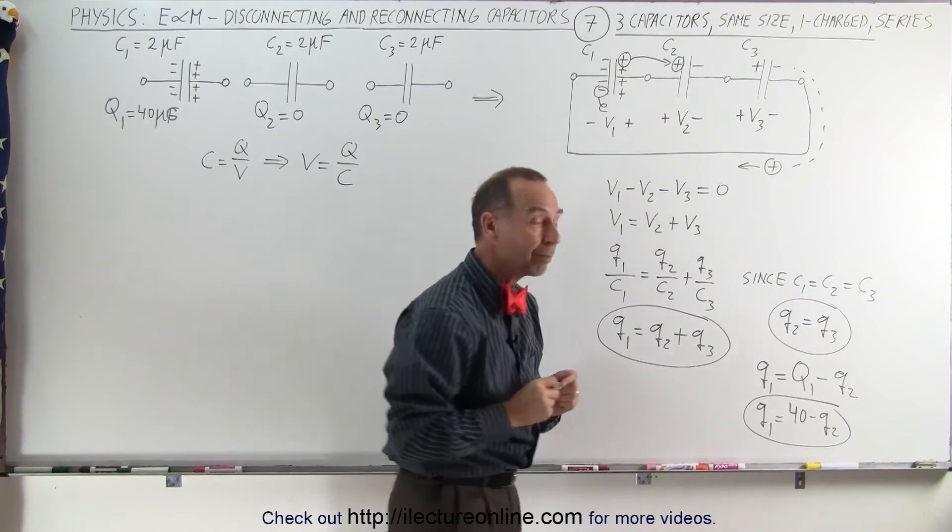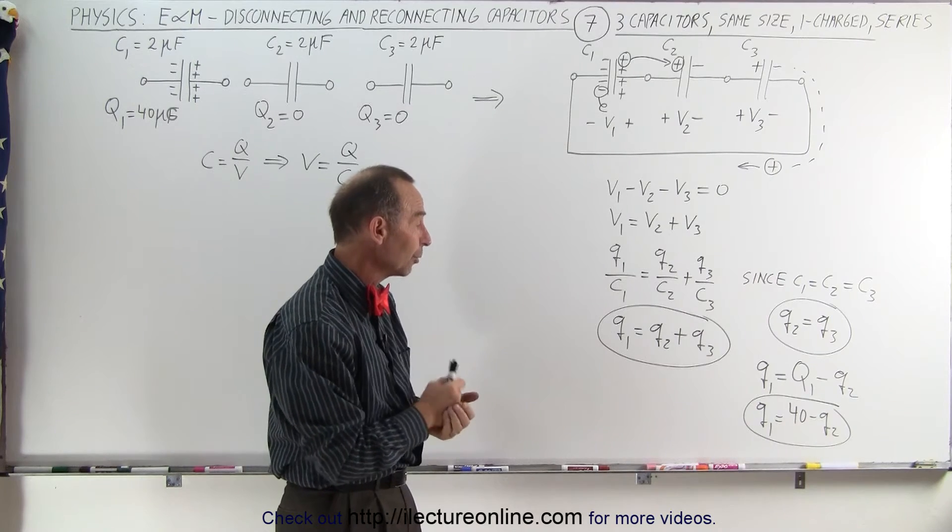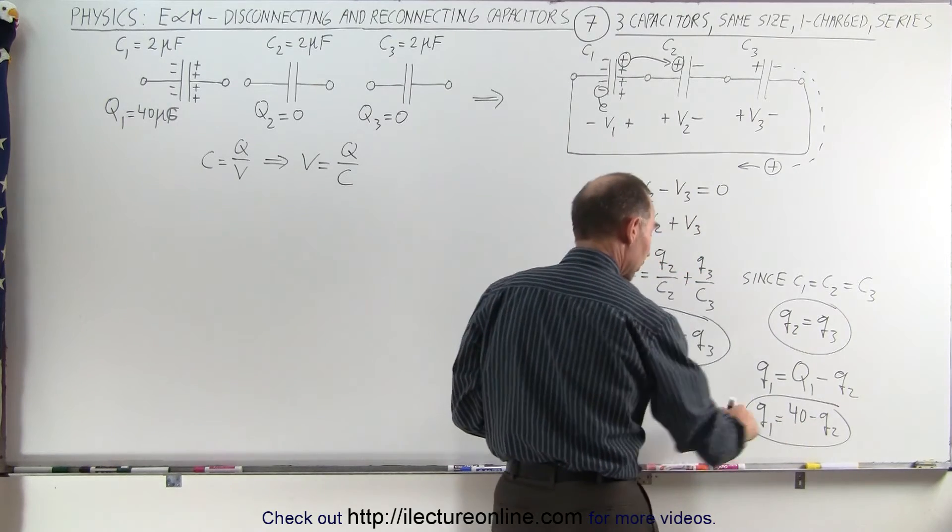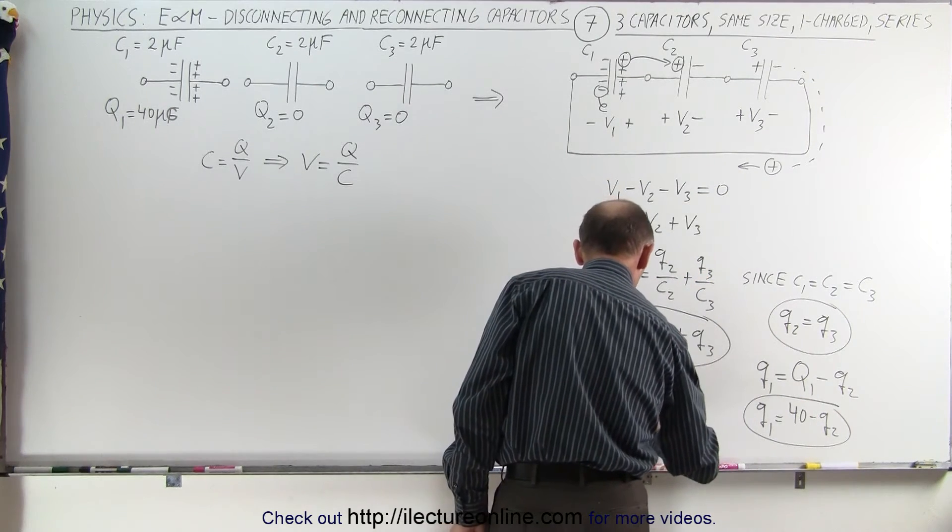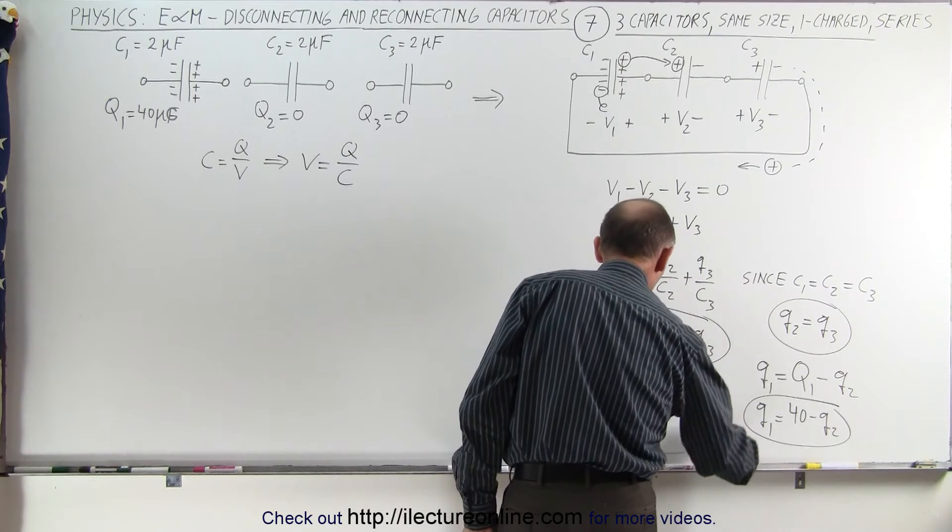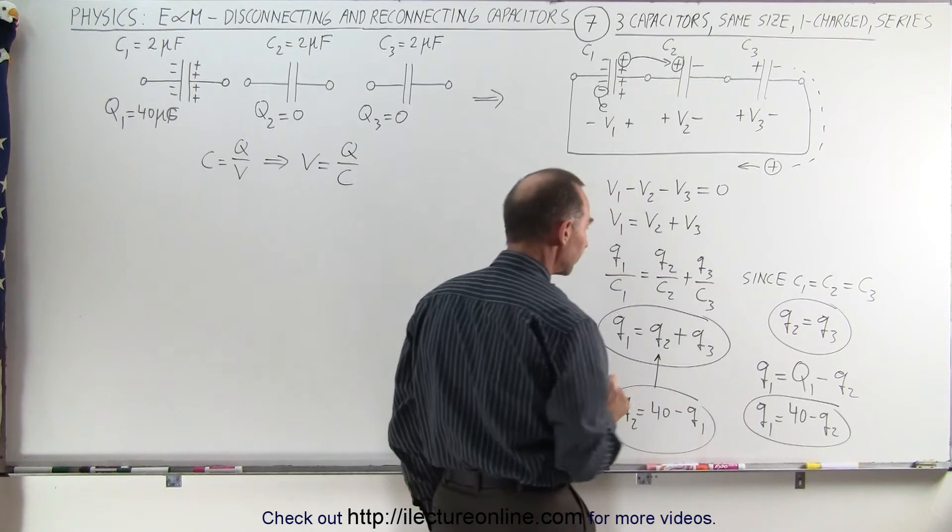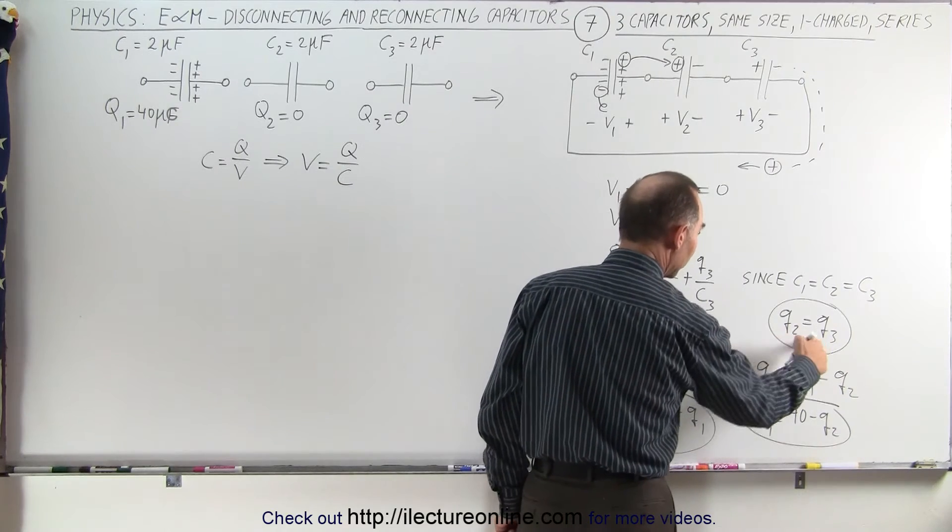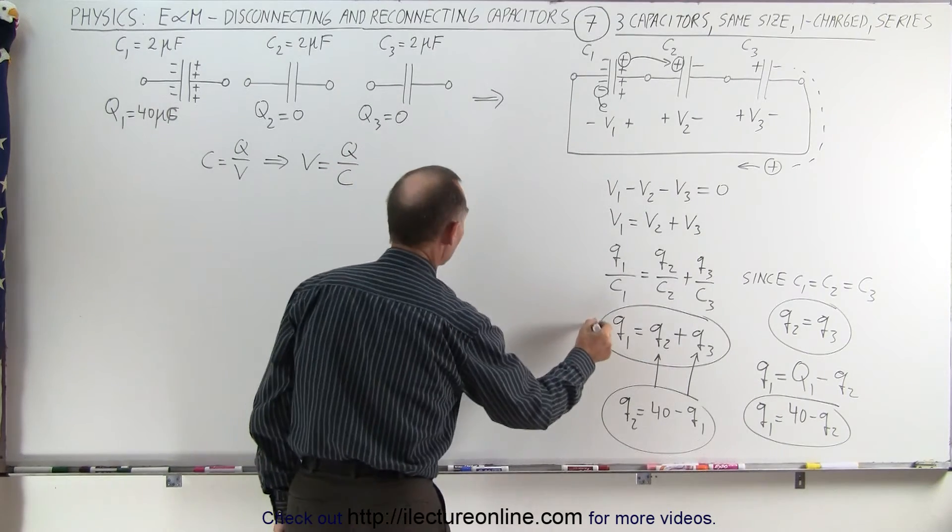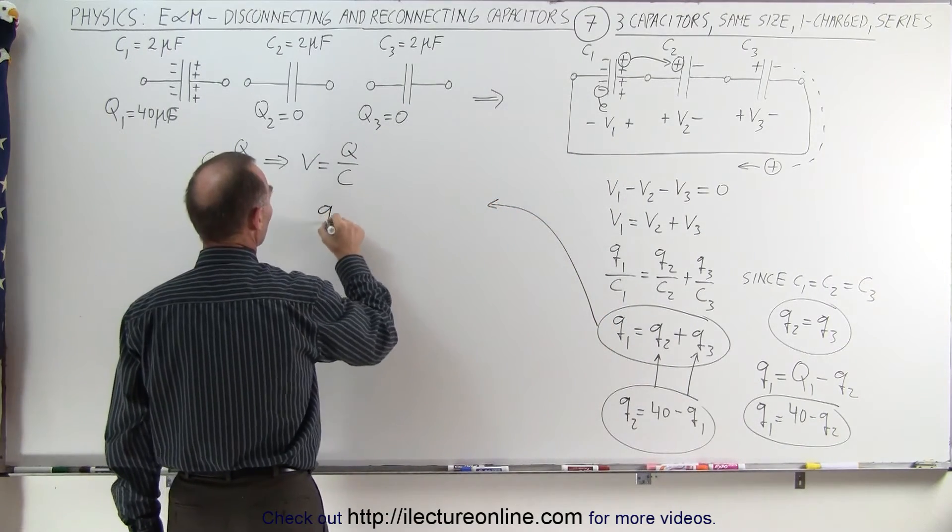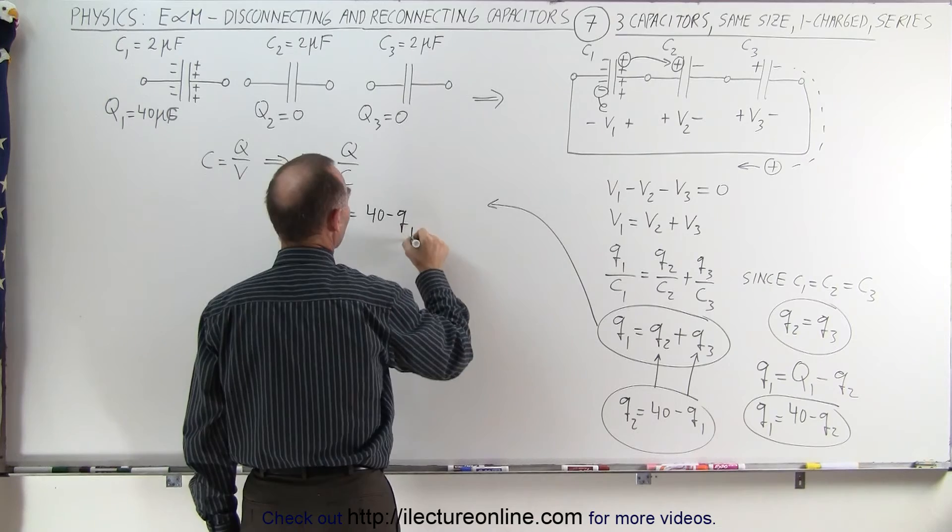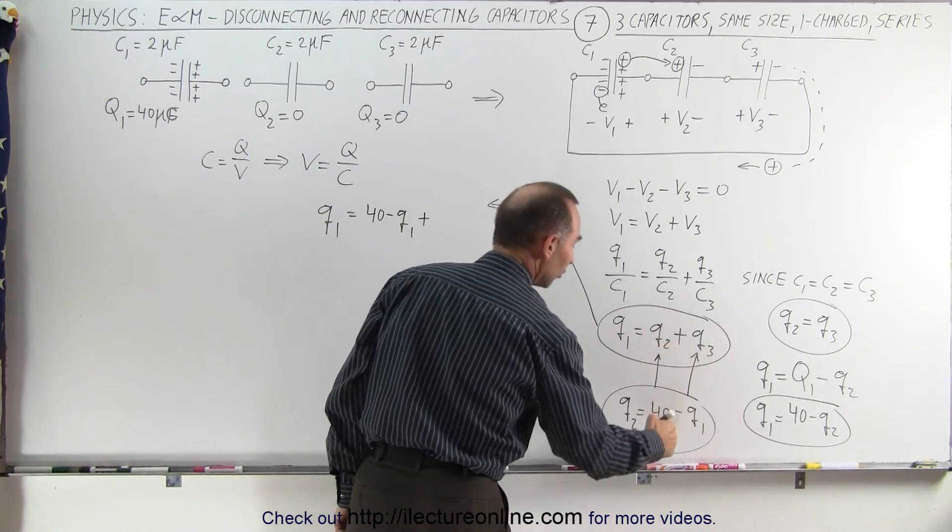So now we have three equations, which is sufficient for us to solve for the three variables Q1, Q2, and Q3. First, we're going to take this equation and write that Q2 equals 40 minus Q1. We're going to replace Q1 and replace Q2 by that. Since Q3 equals Q2, we can also replace Q3 by that. Therefore, this equation now becomes Q1 equals Q2, which is 40 minus Q1, plus Q3, which is 40 minus Q1.